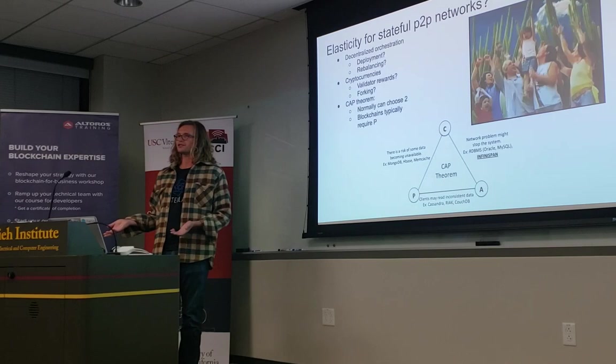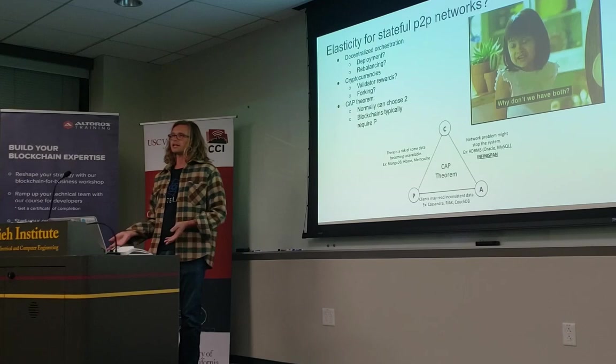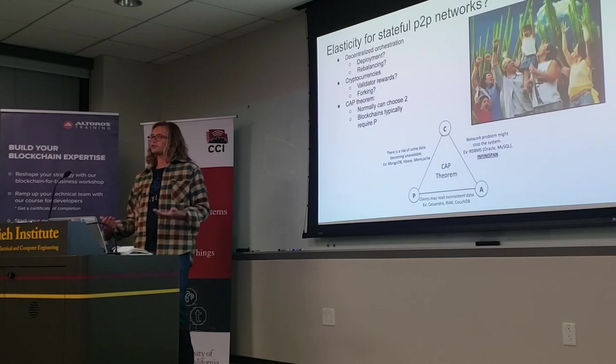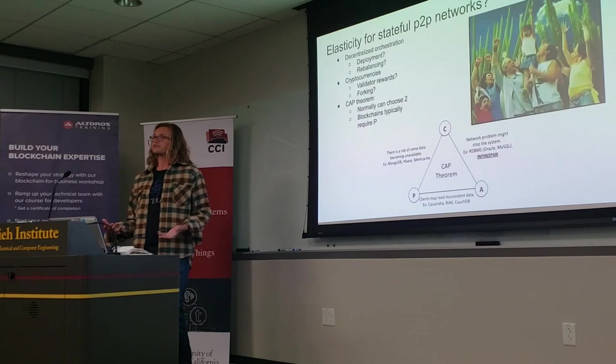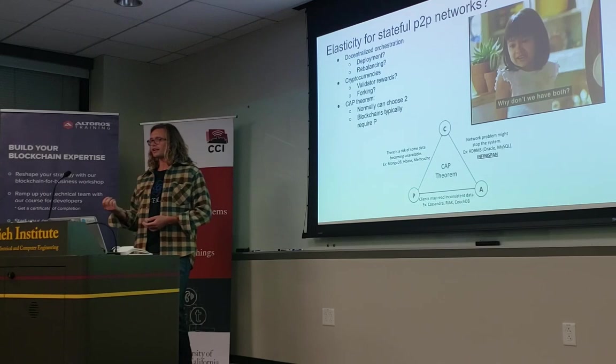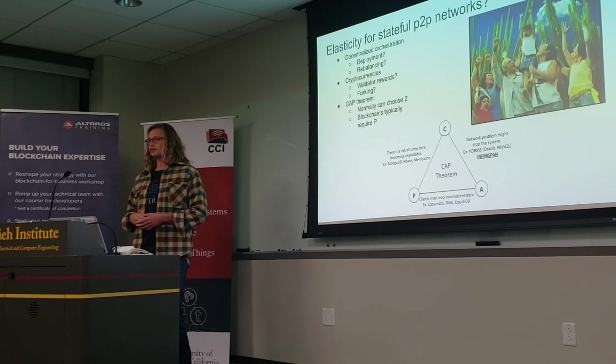In practice, what happens with Bitcoin is that when blocks are created, there's an acceptance time where things are pending until there are enough children underneath such that probabilistically a longer chain couldn't be proposed and that block gets lost. So it's actually a loss on consistency in order to ensure some notion of availability — we can at least see that a transaction has been proposed and is pending.